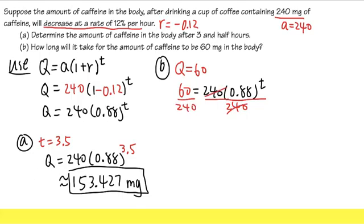Well, 60 divided by 240 is just 1 over 4, which is the same as 0.25. And that's equal to 0.88 raised to the t's power like this.